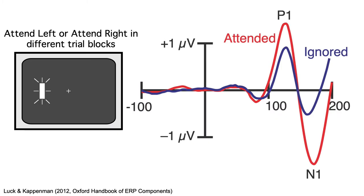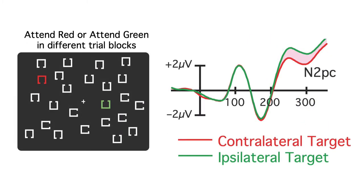The P1 and N1 are larger for attended location stimuli than for ignored location stimuli. However, these effects are typically observed only for spatial attention, and only when attention has shifted prior to stimulus onset. Other kinds of attention don't usually have an impact until later components — for example, we see a component called N2PC if attention shifts to a location after stimulus onset.